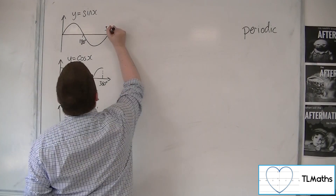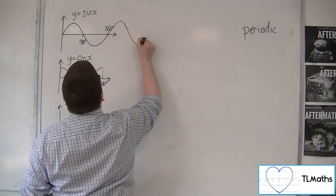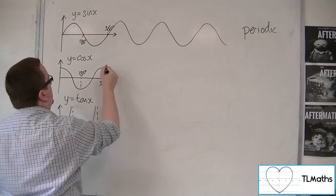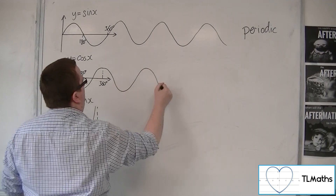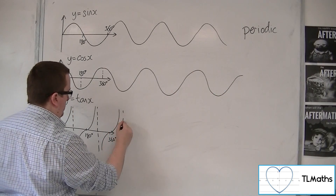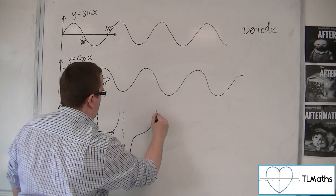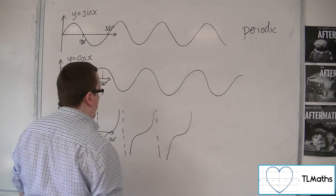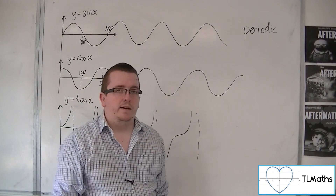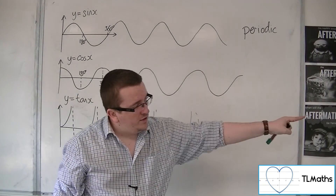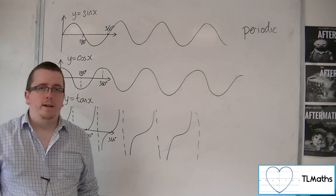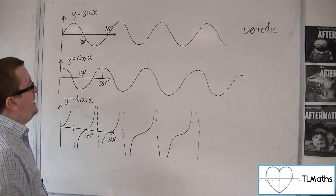In actual fact, this curve — the sine curve, for example — just keeps on going. The cos curve keeps on going. The tan curve keeps on going. They keep on repeating forever and ever in both directions, so they keep on repeating themselves.